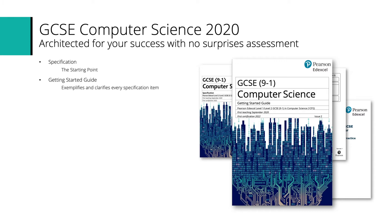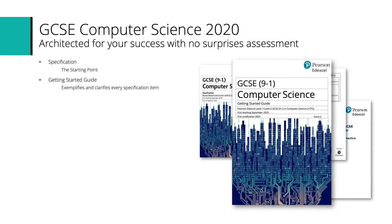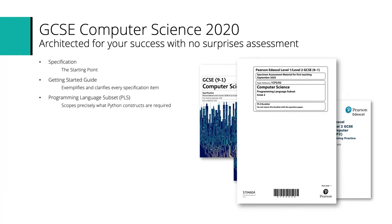The spec and Getting Started Guide help you know where you can stop teaching and what is likely to be assessed. The Programming Language Subset is a vital element of the architecture of this qualification — we've chosen Python as the vehicle for teaching computer science. It was important to scope for teachers and students exactly how much of the Python language needs to be covered. The PLS shows every construct you need in order to get every mark in every paper two that we will write.